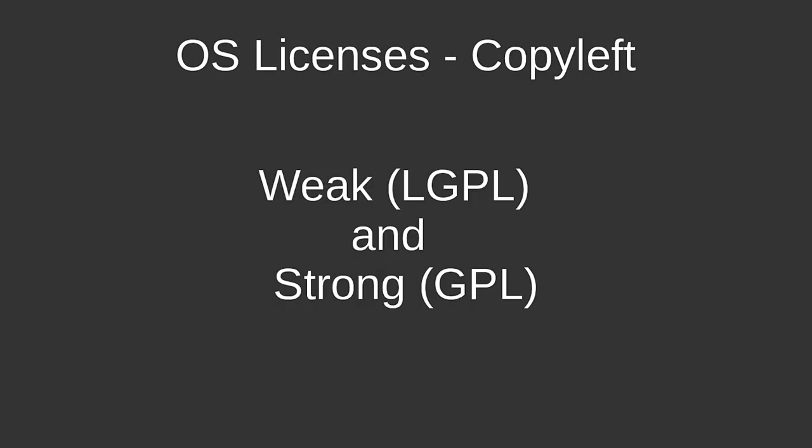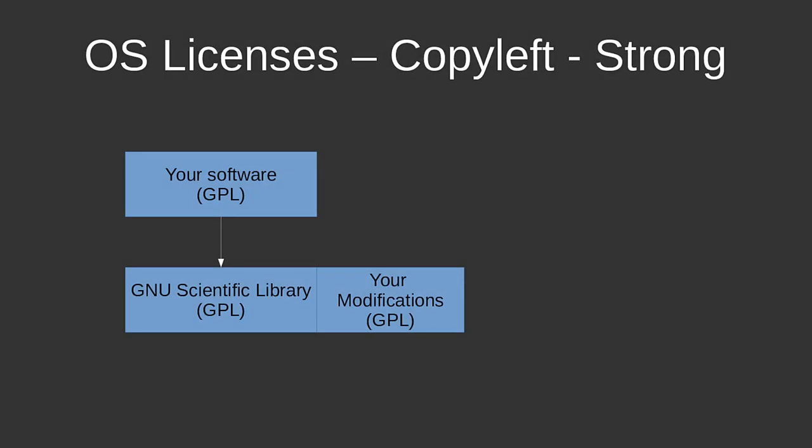There are two classes of copyleft: weak and strong, which are further classifications. The easiest to understand is the strong copyleft. The example here is the GNU Scientific Library, released under the GPL, which is a strong copyleft license. If you make any modifications to it, the modifications must be under GPL. If you write a calculator using GPL software, your software needs to be under GPL. Some say GPL is viral; I'd say it's curating. If you're using a GPL library, you have to use GPL for your software — it basically propagates the obligations.